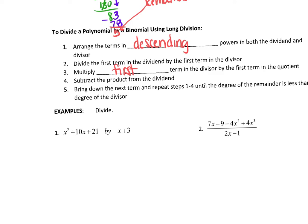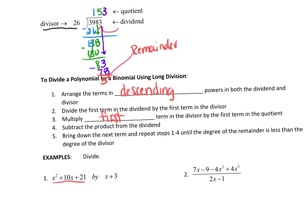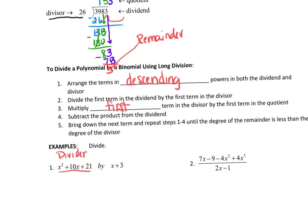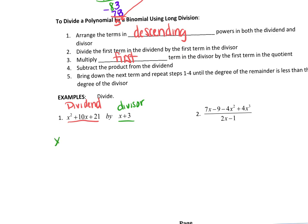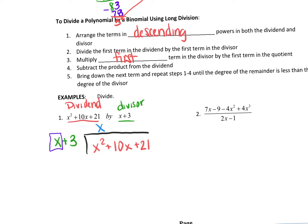Here's how this works. This right here is the dividend and this is my divisor. On the outside I have x plus 3, and I'm going to divide that into x squared plus 10x plus 21. I'm solely going to focus on the highest exponent term, and I want to know what I have to multiply x by to make it look like x squared. To make x look like x squared, I need to multiply it by x.